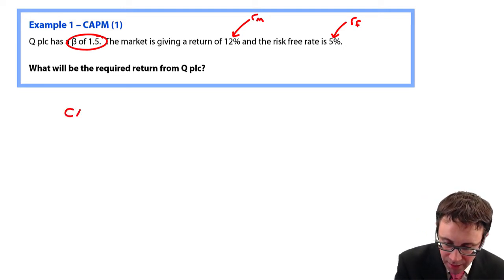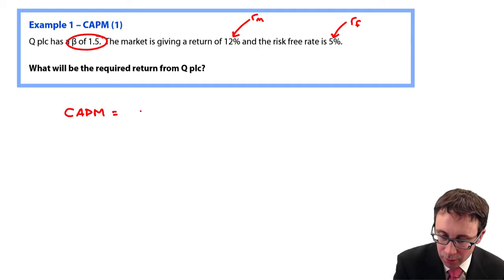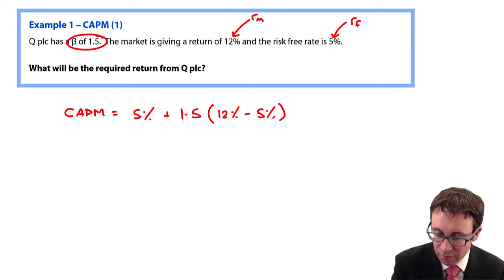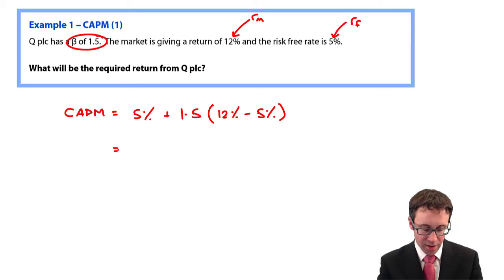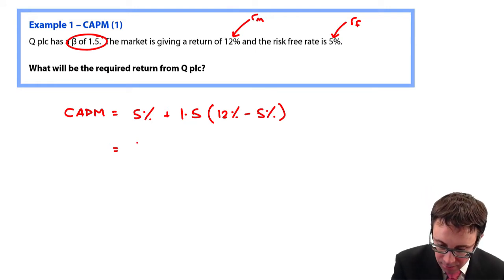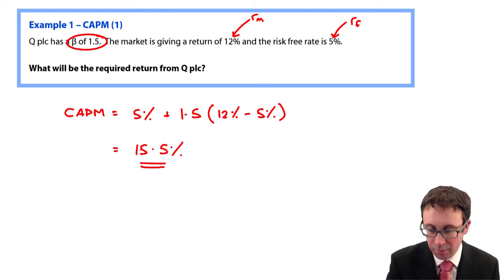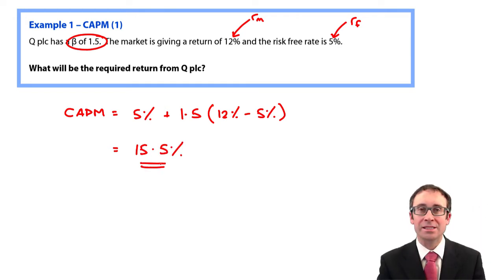The return that we get from the capital asset pricing model is that we have RF, which is there as 5%. Beta is 1.5 and we then multiply that by 12% less the 5%. So what we've got there, 12 less 5 is 7, times by 1.5 plus the 5. The CAPM return is 15.5%.